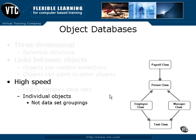Where relational databases are extremely adept at executing reports across sets of data, an object database is extremely good at accessing individual pieces.